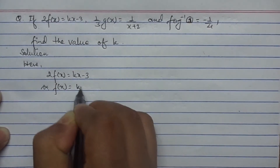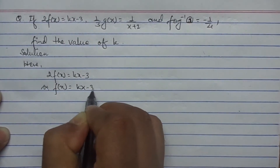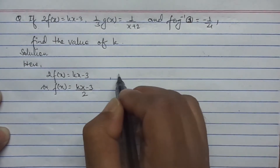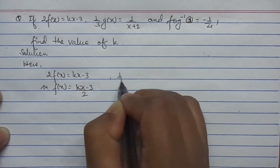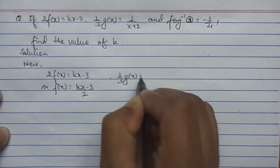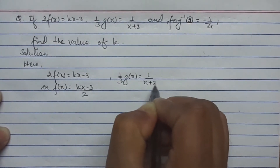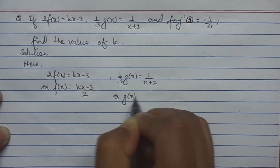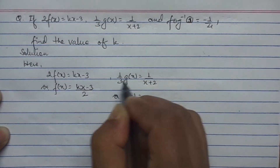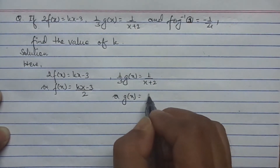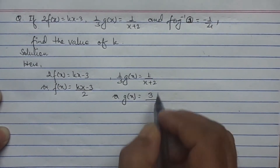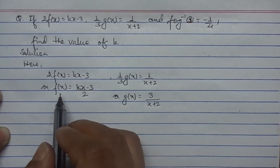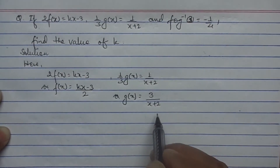f(x) will be (kx minus 3) divided by 2. Similarly, (1/3)g(x) equals 1 upon x plus 2, so g(x) — if we cross-multiply the 3 — will be 3 times 1 upon x plus 2, which gives 3 upon x plus 2. Now the exact f(x) and g(x) functions are obtained.